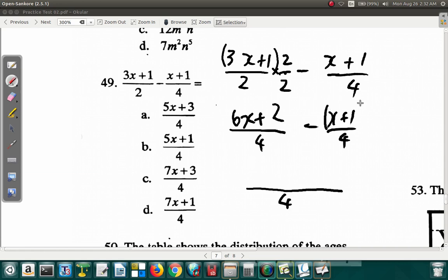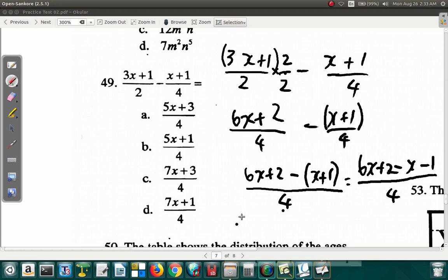Now remember to put the brackets because you're minusing all of this. So it's 6x plus 2 minus the x plus 1. So what you end up with is 6x plus 2 minus x minus 1 when you open the bracket. Alright? Over 4. So continuing here. 6x minus x is going to be 5x. Alright? C and D are out. It's not 7x. It's 5x. 2 minus 1. Positive 2 minus 1, it's plus 1 over 4.